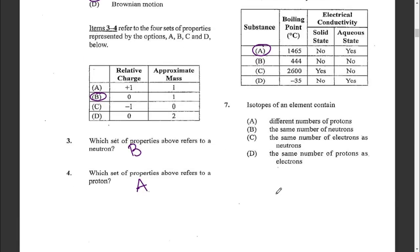Question seven: isotopes of an element contain — A: different numbers of protons, B: the same number of neutrons, C: the same number of electrons as neutrons, or D: the same number of protons as electrons. Isotopes, for example protium and deuterium, have the same proton number but different neutron numbers. The best answer is D — the same number of protons as electrons.